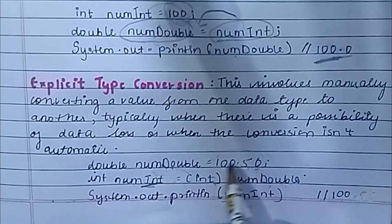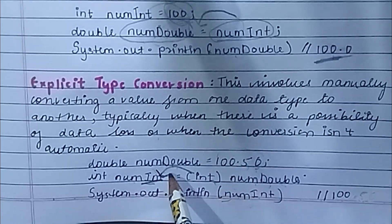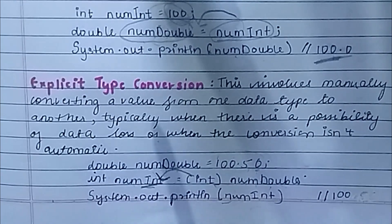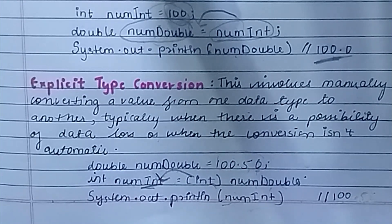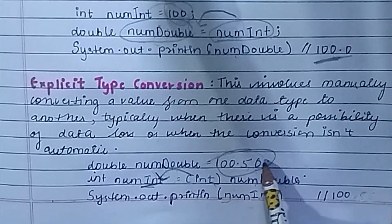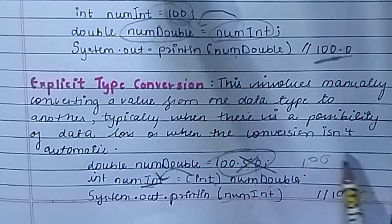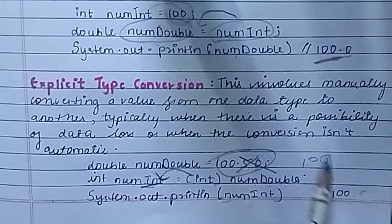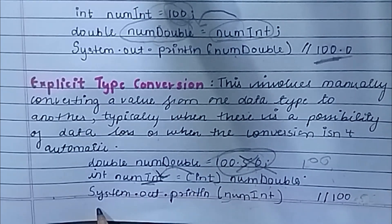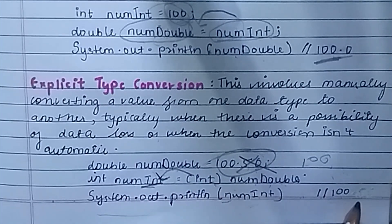Because the integer stores only positive, negative, and zero values, it doesn't take the decimal value. So it will only store 100 from 100.50. Here we have 0.50 data loss. When we print it, the output will be 100.